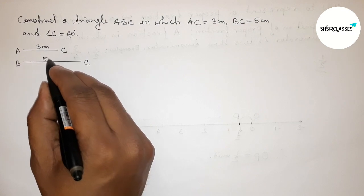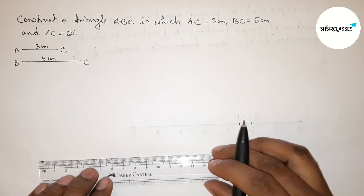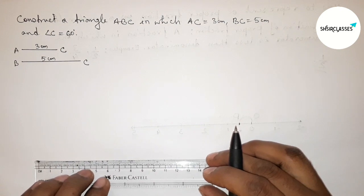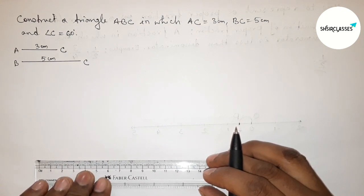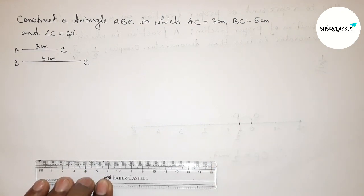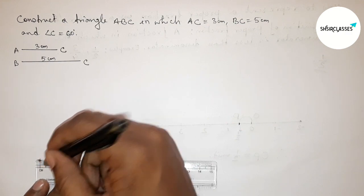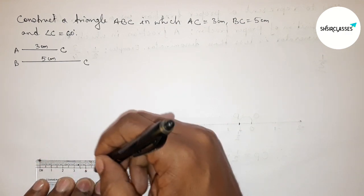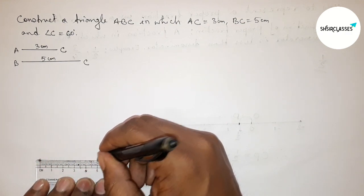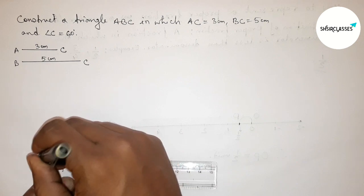Now we have to draw the line BC equals 5 centimeters. Starting from zero, this is 5 centimeters.